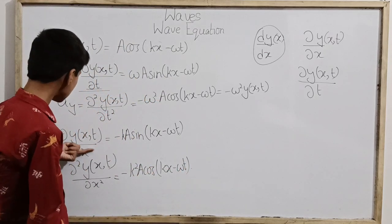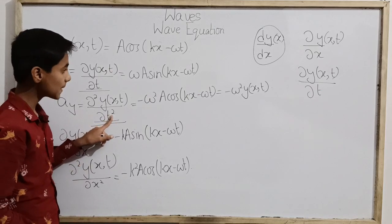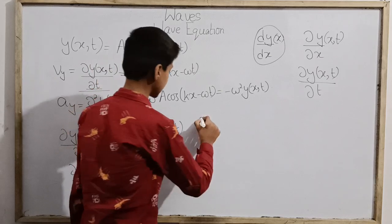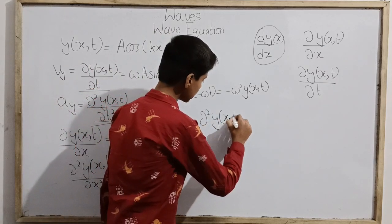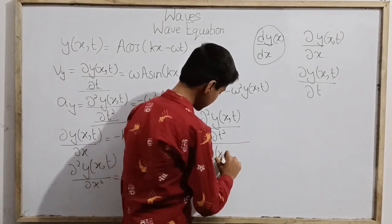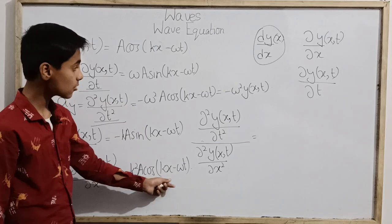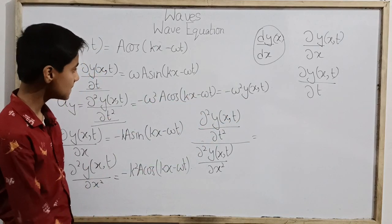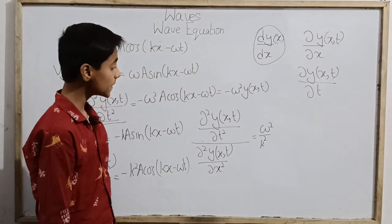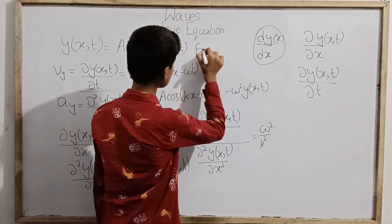Now let us divide these two equations. The second-order partial derivative of the wave function with respect to time is −ω²a cos(kx − ωt), and the second-order partial derivative with respect to x is −k²a cos(kx − ωt). Dividing them: (∂²y/∂t²) / (∂²y/∂x²) = (−ω²a cos(kx − ωt)) / (−k²a cos(kx − ωt)). The wave function terms cancel, the negatives cancel, giving us ω²/k².